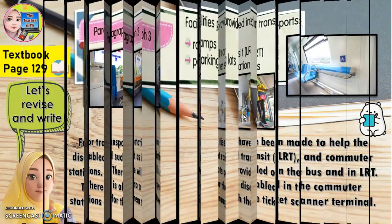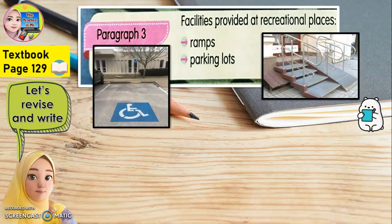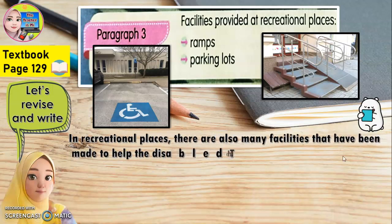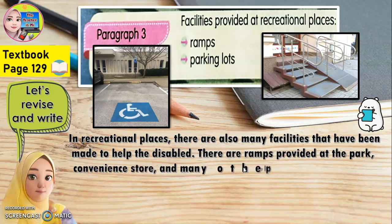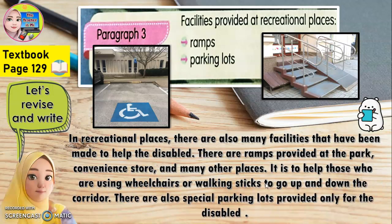Let's go to paragraph three. Paragraph three: facilities provided at recreational places such as ramps and parking lots. This is the ramps — ramps ni yang macam papan gelonsor. This is the ramps and this is the parking lots. In recreational places, there are also many facilities that have been made to help the disabled. There are ramps provided at the park, convenience store, and many other places.